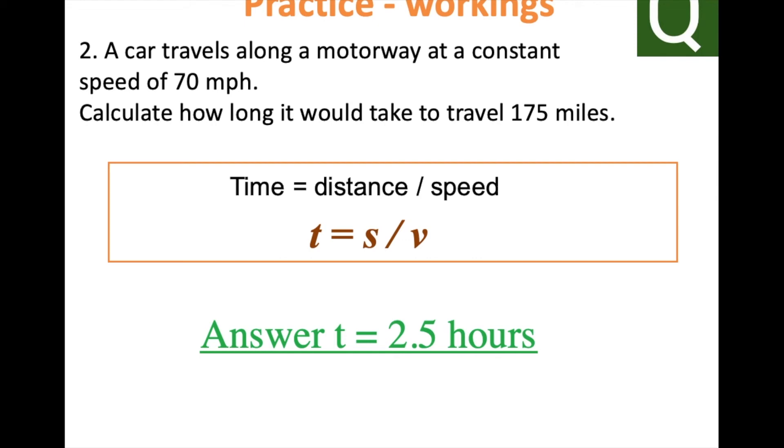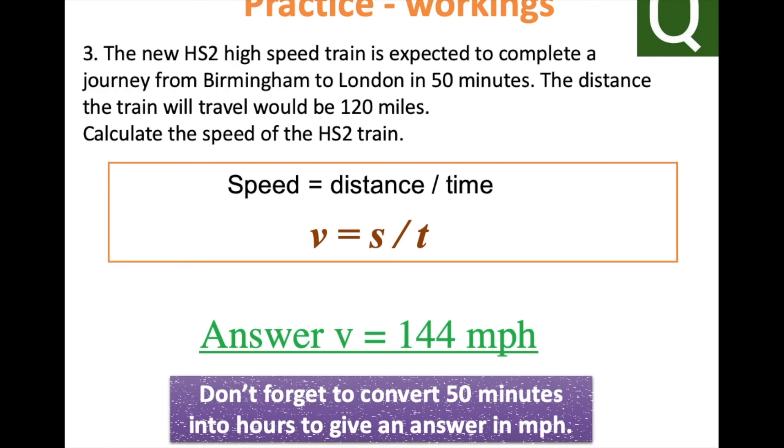The final question: we are looking to calculate the speed, so we're going to divide the distance by the time. Your answer should be 144 miles per hour. Important point there at the bottom: don't forget to convert minutes into hours so that the answer is in miles per hour.